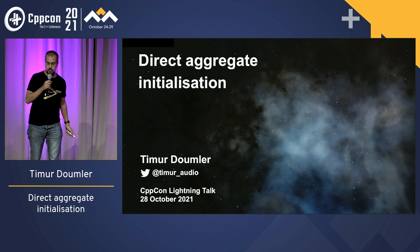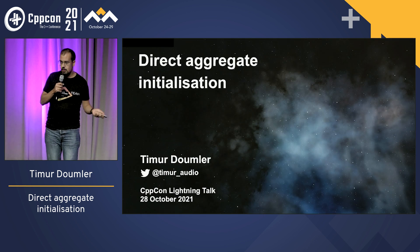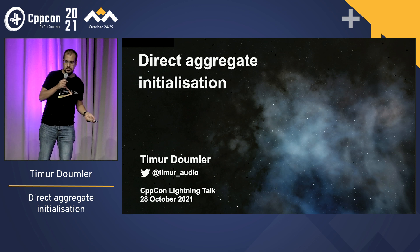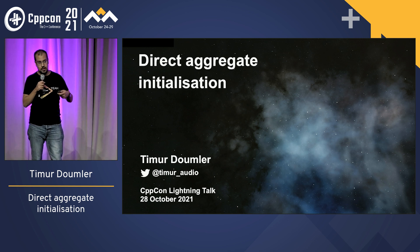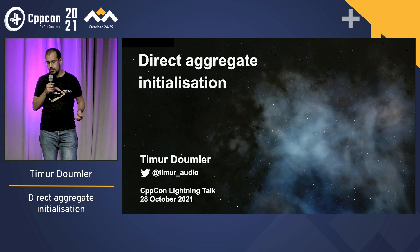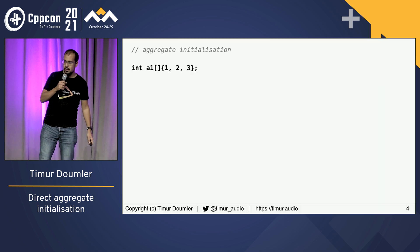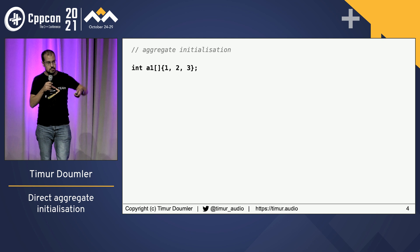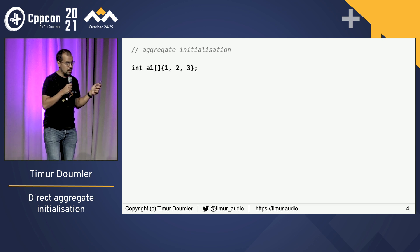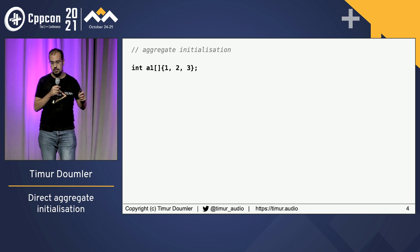In particular, we have this thing called — it's not actually called anything officially, but I call it direct aggregate initialization, because it's direct initialization which is then doing aggregate initialization. We're talking about aggregates, like for example an array. You could always initialize this like this with list initialization, which is then going to perform aggregate initialization.